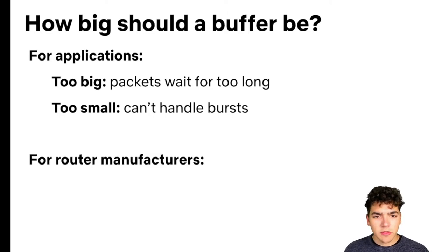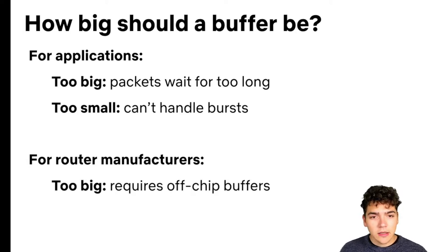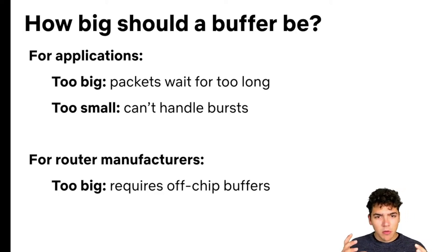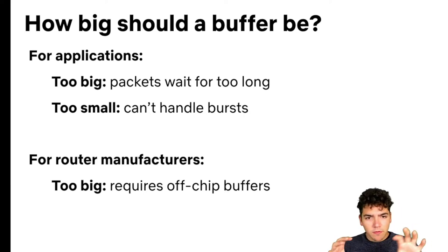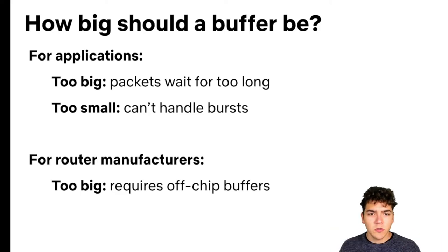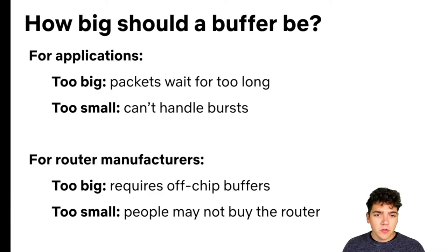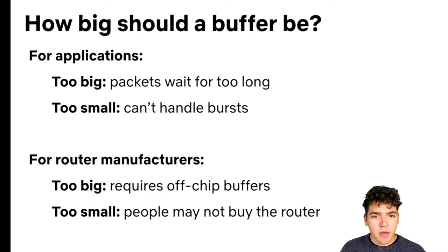For router manufacturers there are also trade-offs with buffer sizing. If the buffer is too big, more engineering work is required — with a small buffer you can fit it on the same chip that does the routing, but with a big buffer you have to put it off-chip and spend bandwidth going back and forth between chips. But if the buffer is too small, people might not buy the router because it won't work well for their applications.